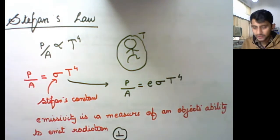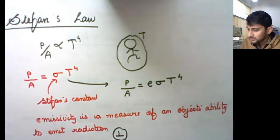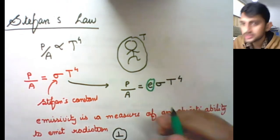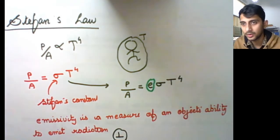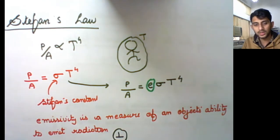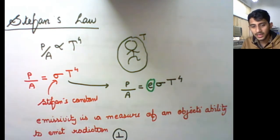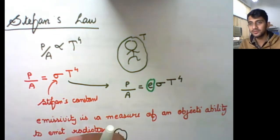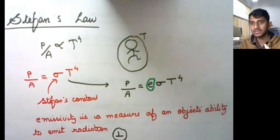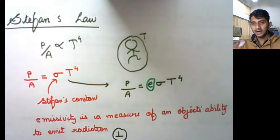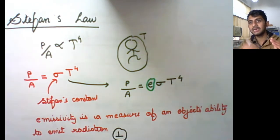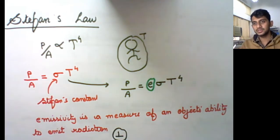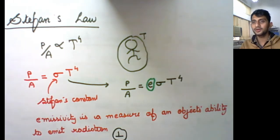Emissivity is a unitless quantity — it is a comparison with the black body. For example, if a black body at a given temperature gives certain radiations, and an ordinary body at the same temperature gives 97% of those radiations, then the emissivity of that ordinary body is 0.97.